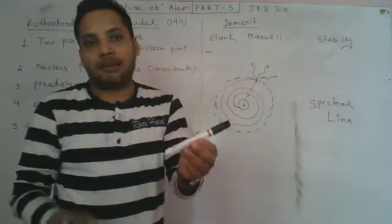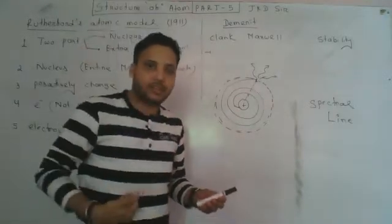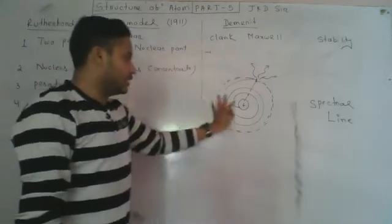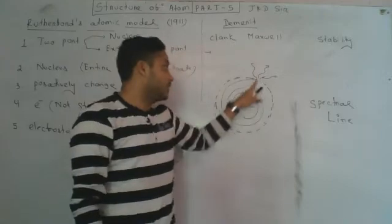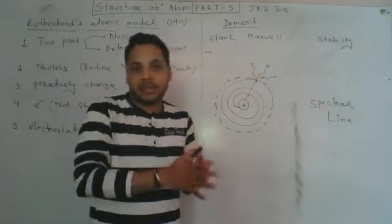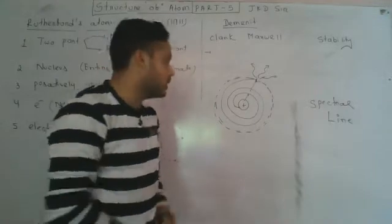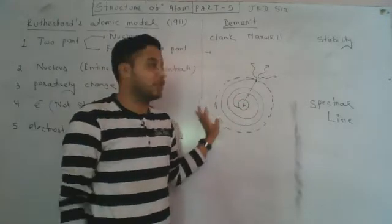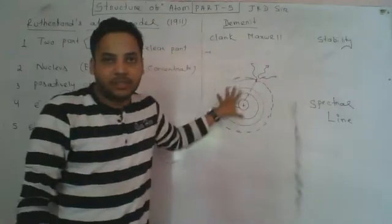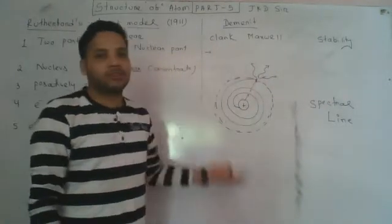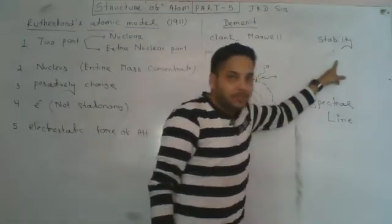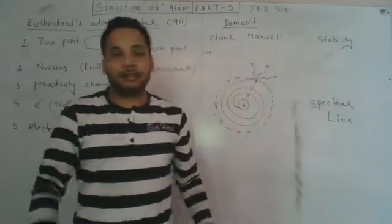As the electron continuously loses energy, its radius would keep decreasing. Eventually the electron would spiral into the nucleus and the atom would collapse. This means the atom would not be stable. Atom is not stable according to this model.